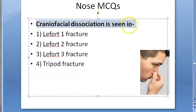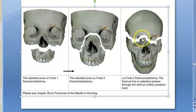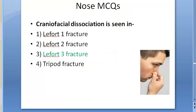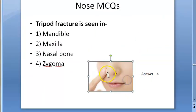Craniofacial dissociation is seen in which fracture? This is LeFort 3 fracture — craniofacial dissociation happens in LeFort 3 fracture.